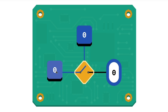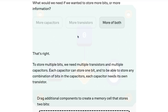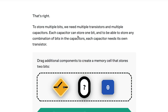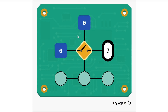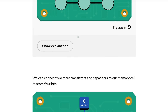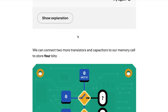Of course, there are many other details, like how the information is read or the process of memory refreshing. But this is the core process by which memory is probably being stored in your computer's RAM right now. This interactive diagram, by the way, is part of a course on how technology works from Brilliant.